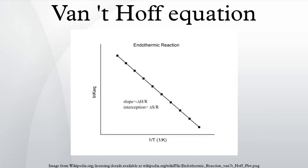Under standard conditions, the Van't Hoff equation is expressed where R is the ideal gas constant. This equation is exact at any one temperature. In practice, the equation is often integrated between two temperatures under the assumption that the reaction enthalpy ΔH is constant. Since in reality ΔH as well as ΔS do vary with temperature for most processes, the integrated equation is only approximate.